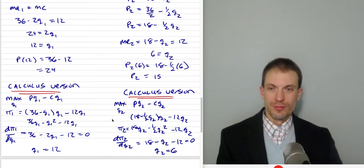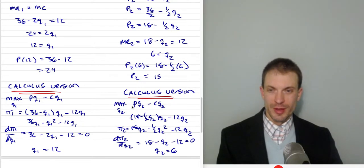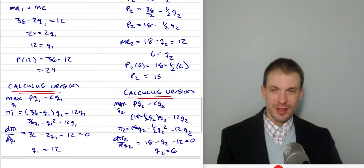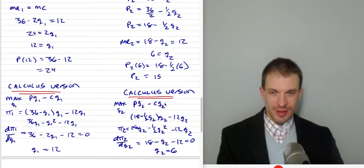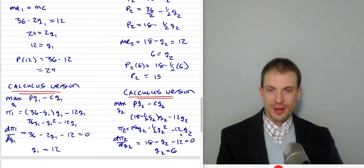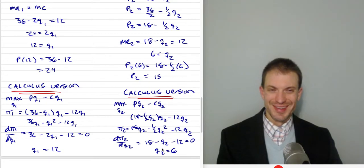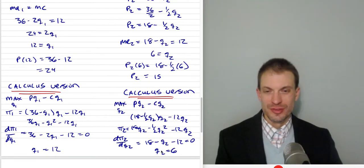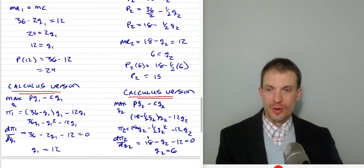The same calculus approach applies to market 2. The firm maximizes profit by choosing Q2, substitutes the inverse demand into the profit function, takes the derivative with respect to Q2, and again confirms Q2 = 6.